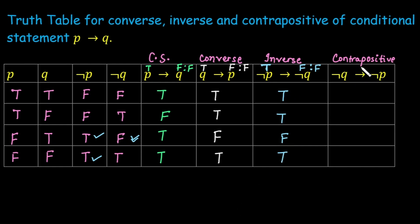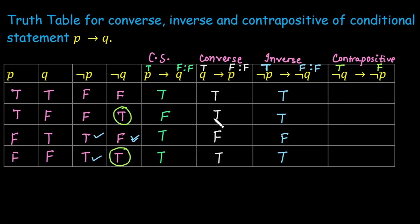For the contrapositive, negation Q implies negation P: this is false only when not Q is true and not P is false. Not Q is true in the second and fourth cases. Among those, not P is false only in the second case. So only in the second case is the contrapositive false; otherwise it is true.